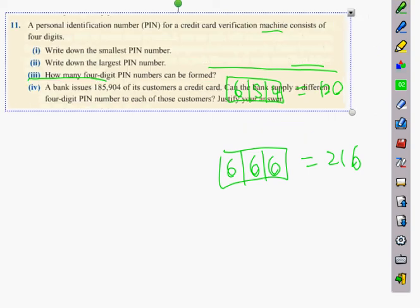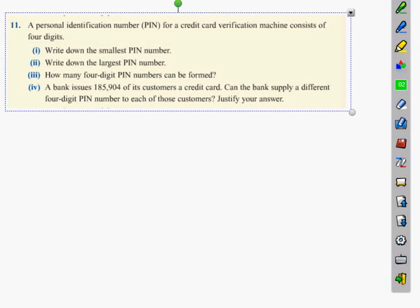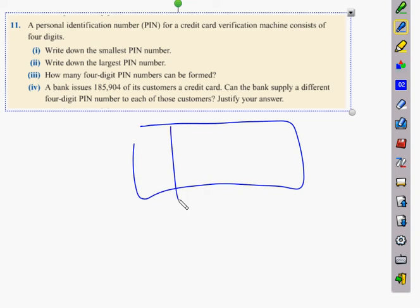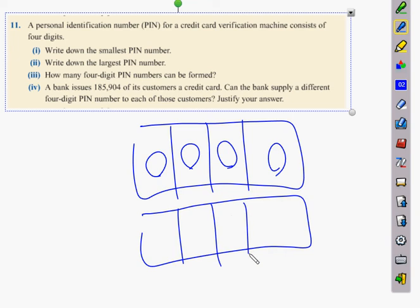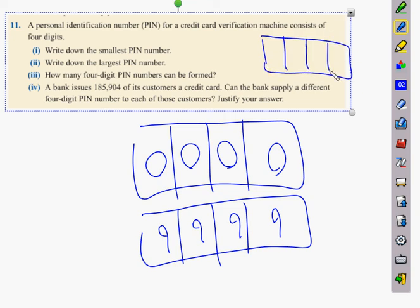This one here. A personal identification number PIN for a credit card consists of four digits. Write down the smallest PIN number you can think of. Write down the largest PIN number you can think of. Get the gist of this. How many four-digit PIN codes can be formed? How many choices do we have for the first one? Not nine, because zero doesn't exclude zero. Ten.